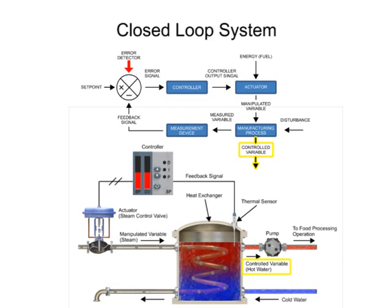The controlled variable is the actual variable maintained in the process. In this example, the controlled variable is the temperature of the water leaving the tank.